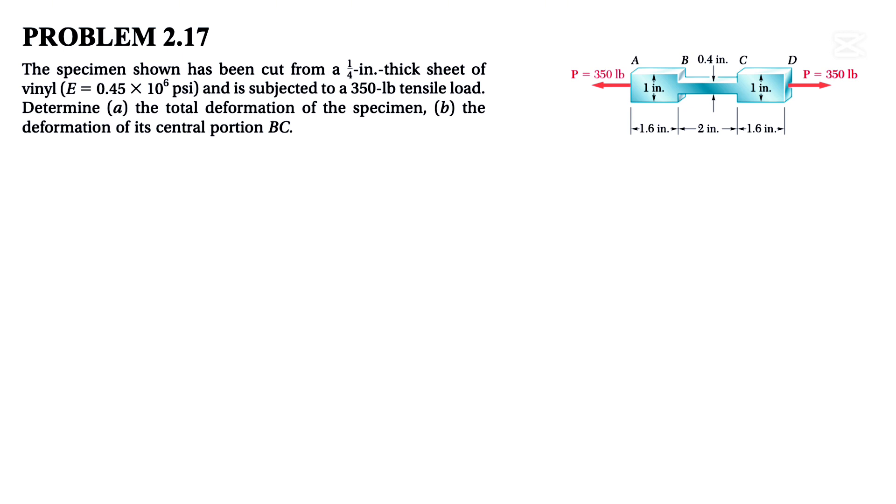We are given a specimen that has been cut from a quarter inch thick sheet of vinyl. So as we can see, the thickness that the question is referring to is what we have from here to here. So we know this one's quarter inch and it's made from vinyl. We have the Young's modulus for this sheet which is 0.45 times 10 to the 6 psi and it's subjected to a 350 pound tensile load.